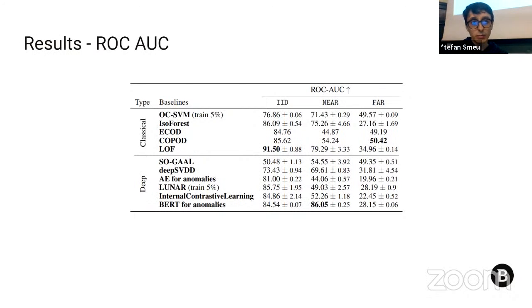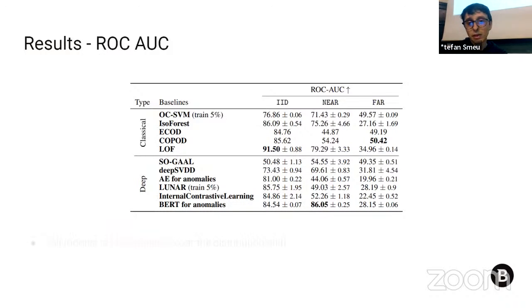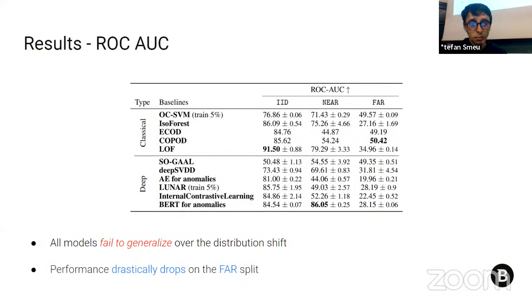We evaluate multiple baselines on the AnoShift benchmark by computing the ROC AUC on the three data splits, including both classical and deep learning baselines: probabilistic methods such as ECOD and COPOD, proximity-based methods such as Local Outlier Factor, deep SVDD for one-class classification, LUNAR (a graph-based method), BERT for anomalies (a masked language model), and others. Most models show better performance on the IID split compared to near, and very low performance on the far split. The best-performing baseline on the far split, COPOD, barely achieves random performance on this temporally distant data.